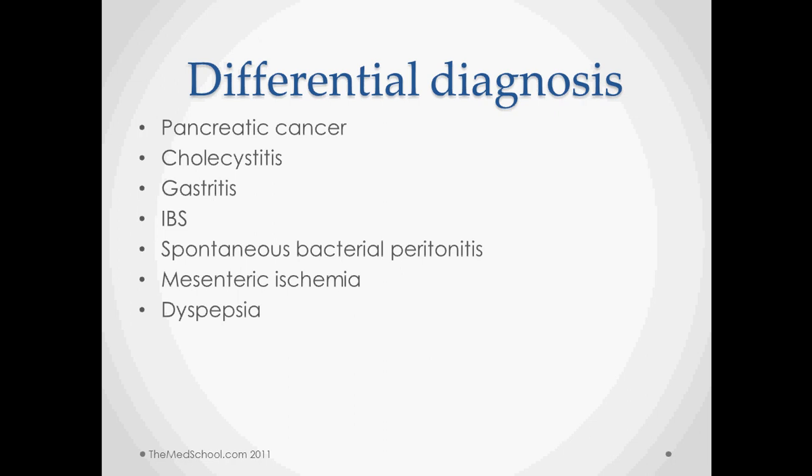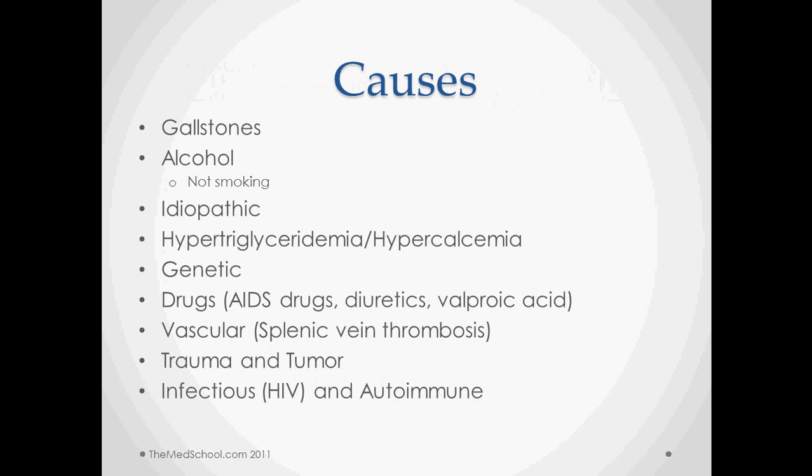Spontaneous bacterial peritonitis will have that same type of peritoneal pain — the pain is often such that patients don't want to move, as movement will often make it worse, and that will be similar to the presentation of spontaneous bacterial peritonitis. Mesenteric ischemia generally will have lower abdominal pain but can present similarly, and dyspepsia is often not quite as severe.